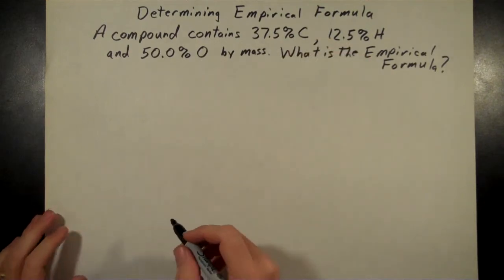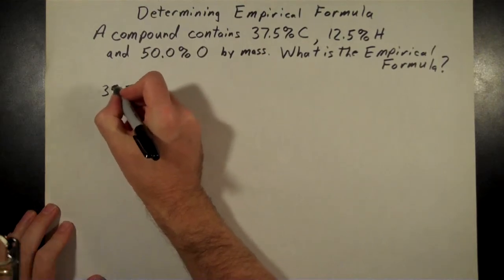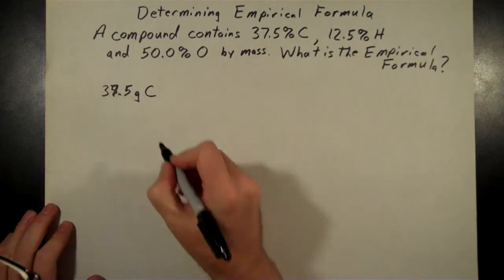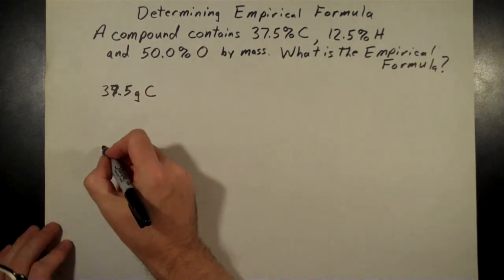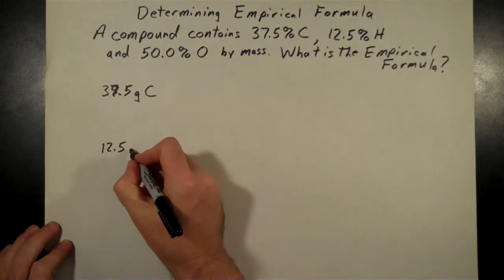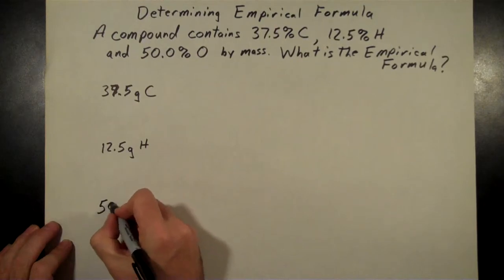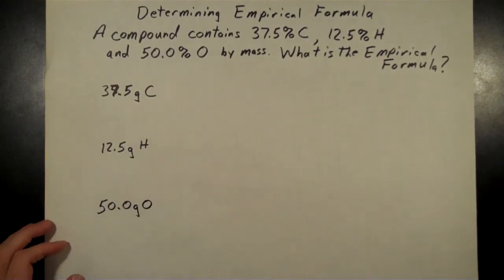So instead of 37.5% carbon, we're going to make that 37.5 grams of carbon. And do the same thing for the hydrogen. So that 12.5% hydrogen, we're going to make that 12.5 grams of hydrogen. And finally, the 50% oxygen will make that grams of oxygen.